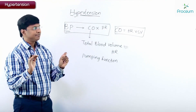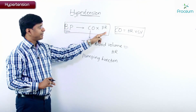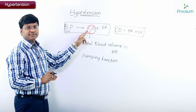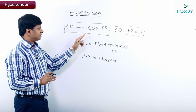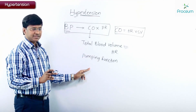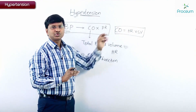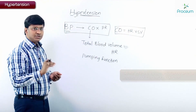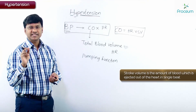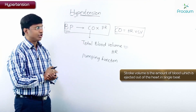In summary, blood pressure is given by the formula: cardiac output into peripheral resistance. Cardiac output is dependent on the total blood volume, heart rate, and pumping function — that is, cardiac output equals heart rate into stroke volume. Stroke volume is the amount of blood ejected out of the heart in a single beat.